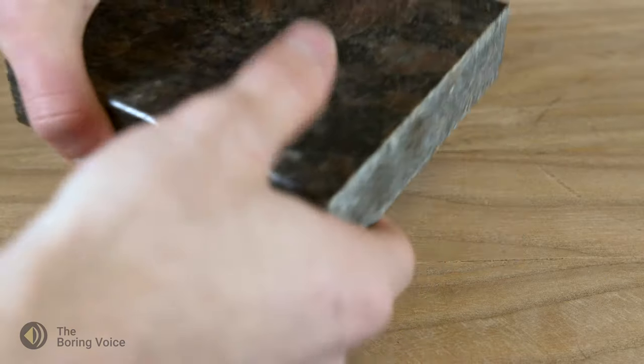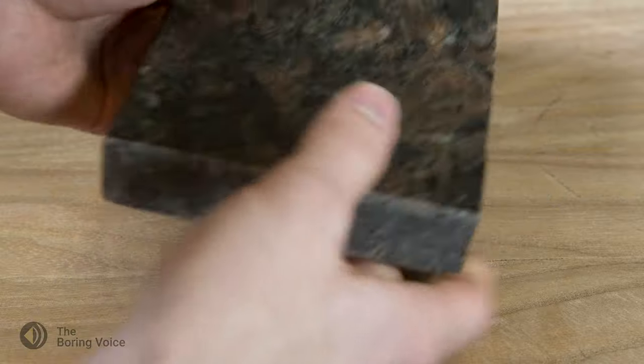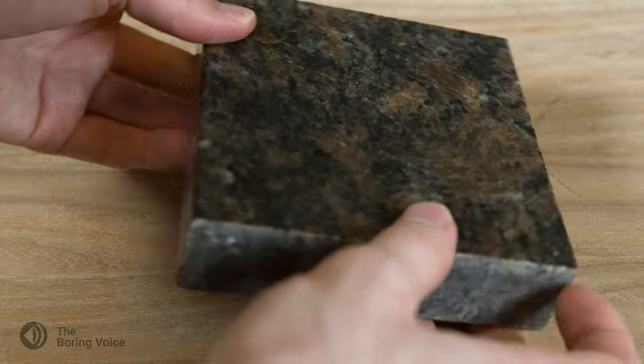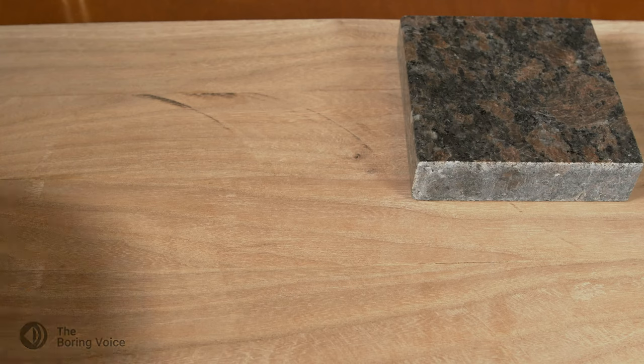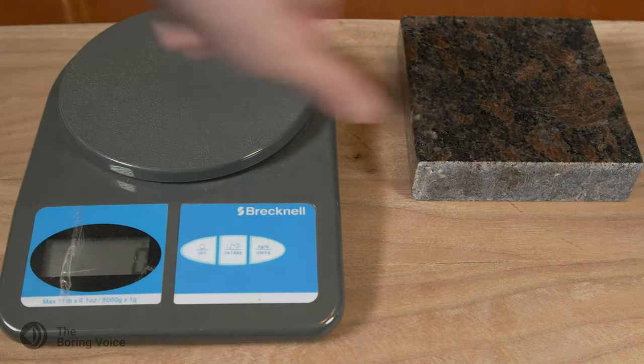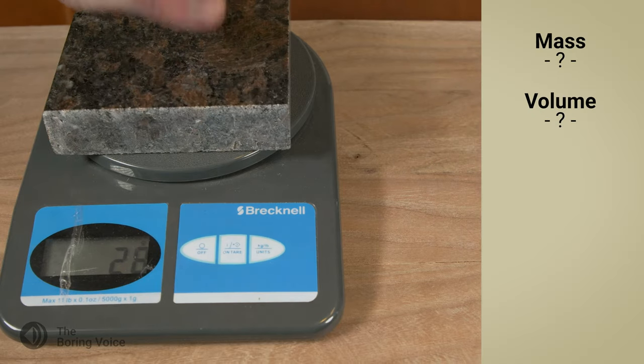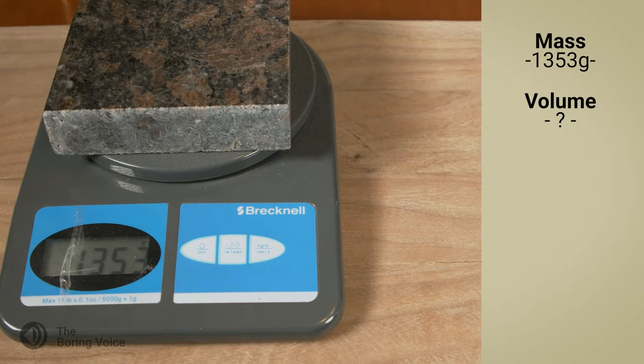Now let's begin the experiment. Here I have a piece of cut and polished stone cut from a countertop. In order to calculate the density of this object, I need mass and volume. Mass is easy to obtain as I can use my digital scale. The scale gives me a mass of 1,353 grams.